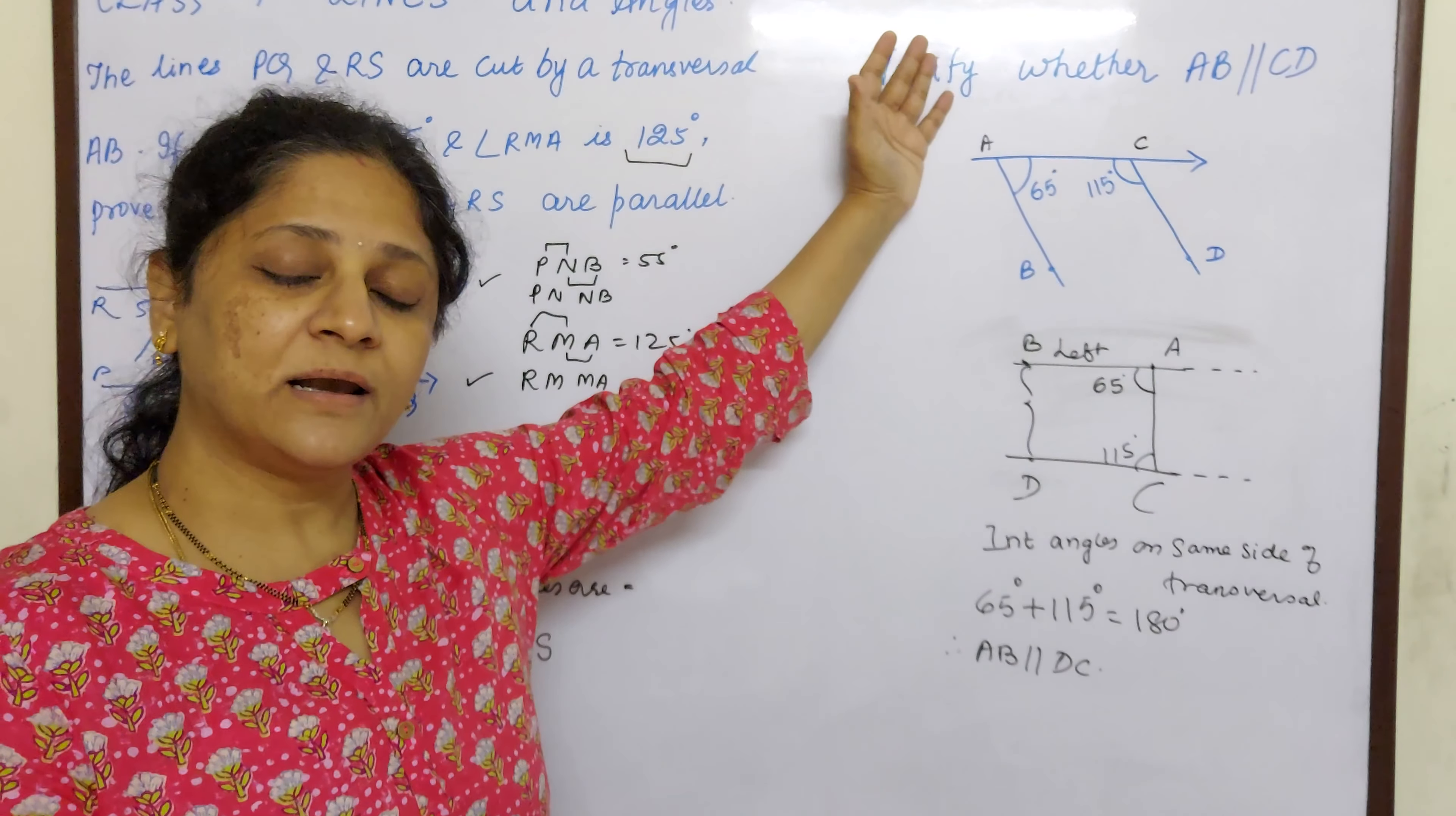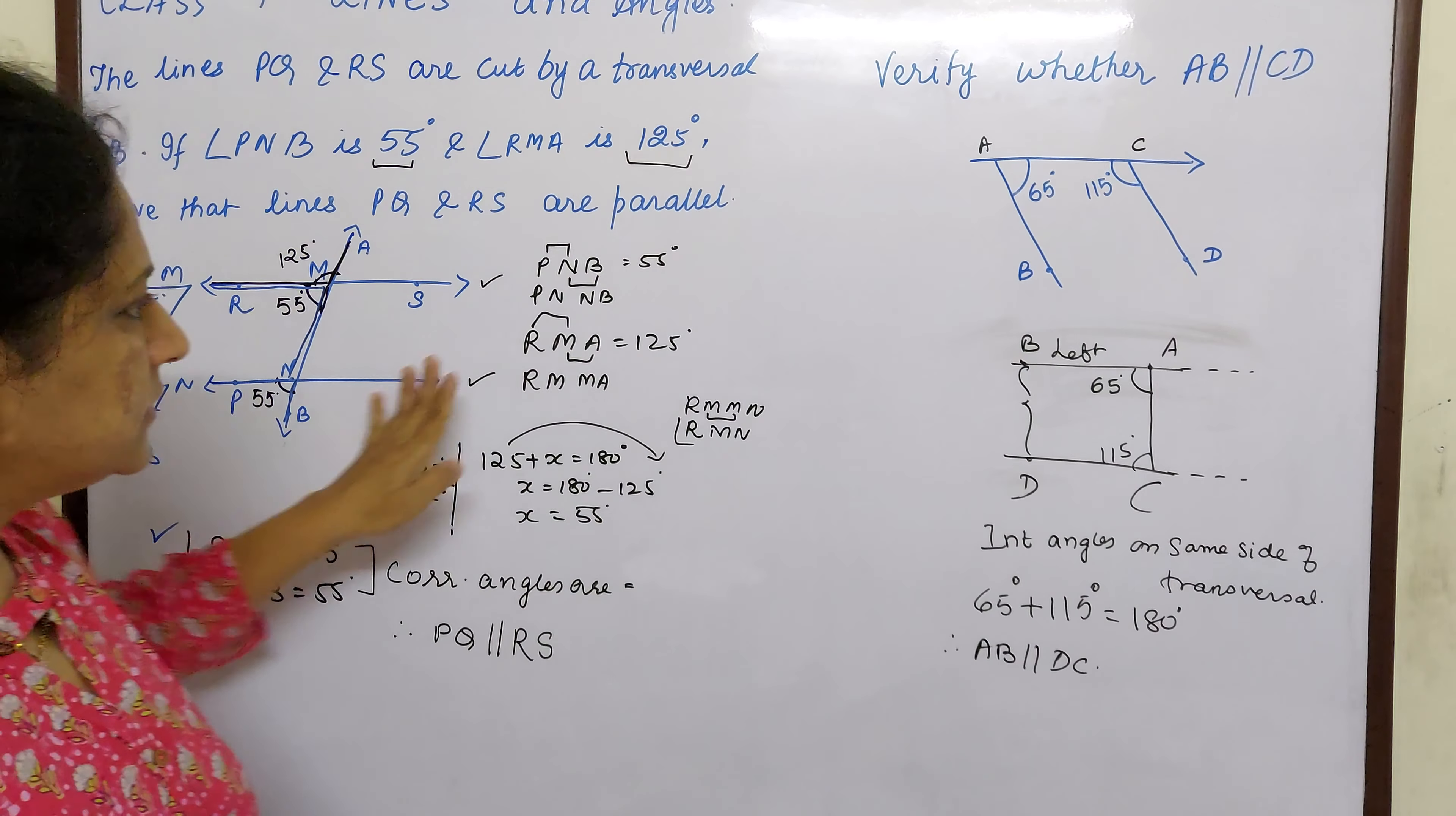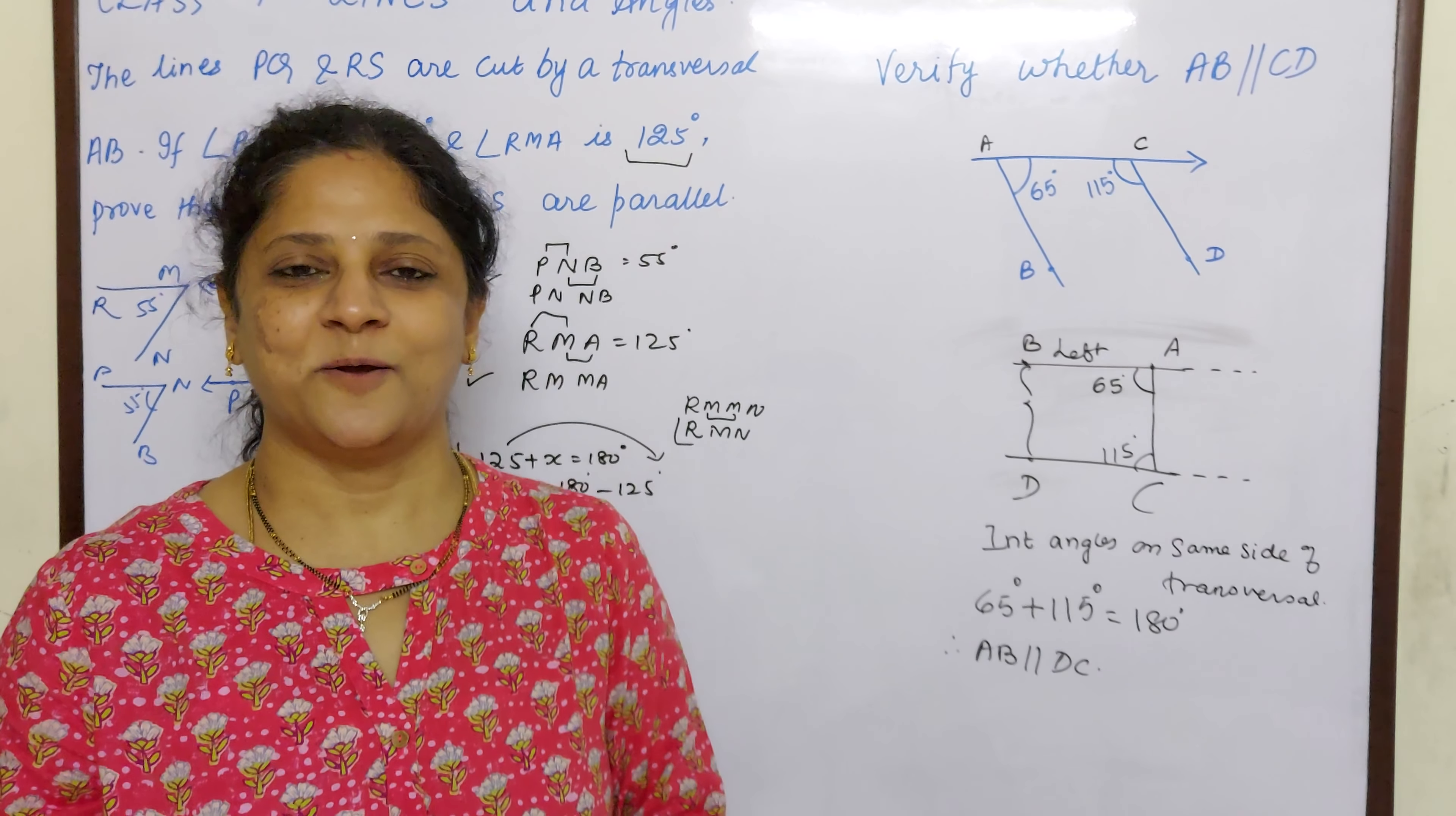So first they told they are parallel lines. And we had to find corresponding angles. In this sums, we have to tell them that corresponding angles are equal. And so these lines are parallel to each other. Hope you understood children. Now maybe it is becoming easy for you when you start solving sums like this. Bye for now.